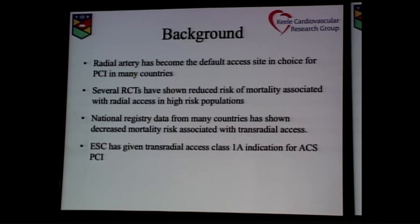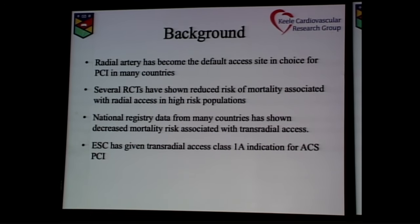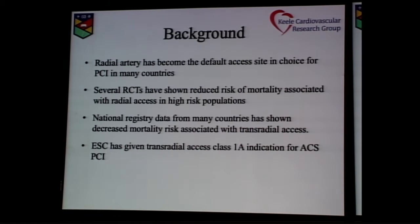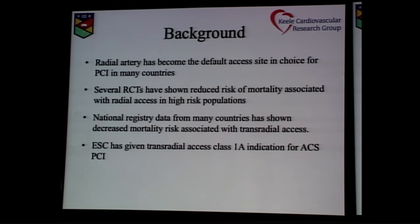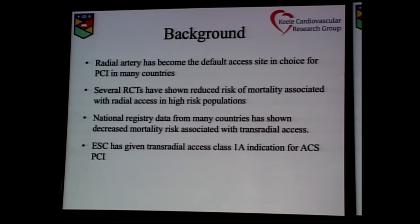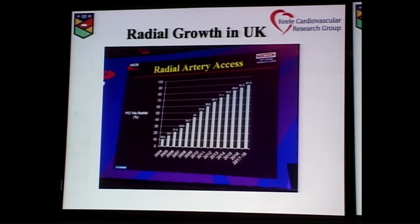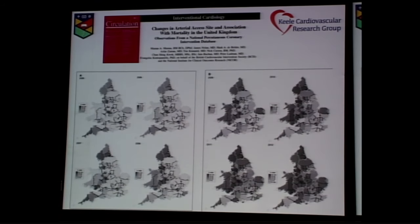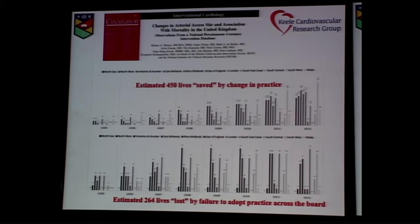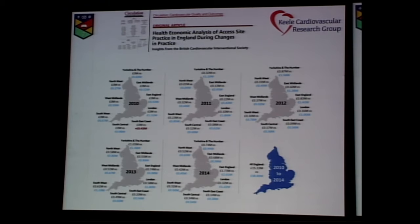Several randomized controlled trials have shown reduced risk of mortality associated with the transradial route in high-risk populations. Transradial access is a Class I indication for ACS by the European Cardiac Society. In the United Kingdom, 87% of all PCIs are now performed through the radial approach. Nationally, adoption of radial has saved an estimated 450 lives and 15 million pounds. Radial saves lives and saves money.